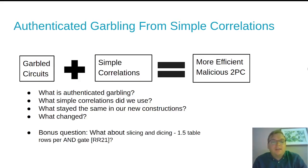And then as a very quick aside, I will mention the slicing and dicing work of Russell, Lick, and Roy from last year. And it is an open question whether or not this 1.5 table rows per AND gate can be transferred into authenticated garbling.